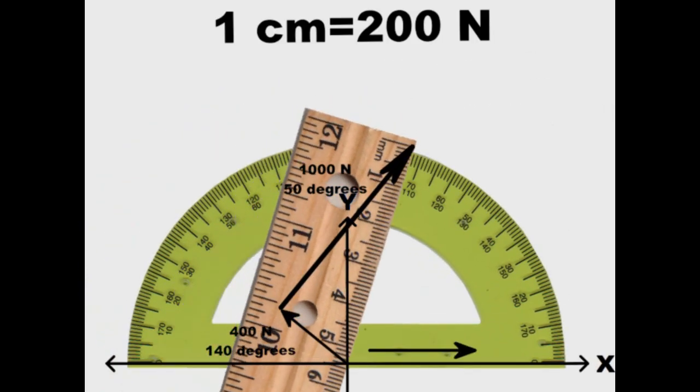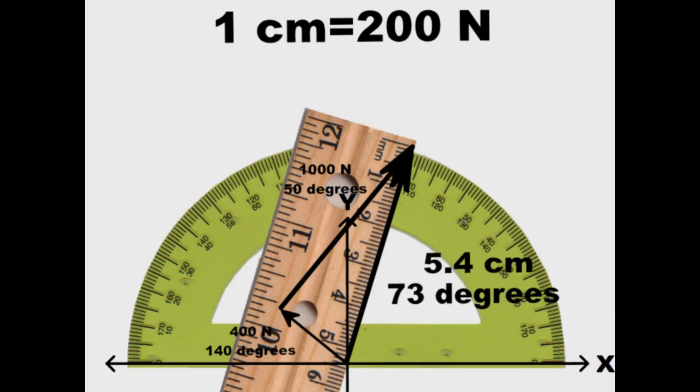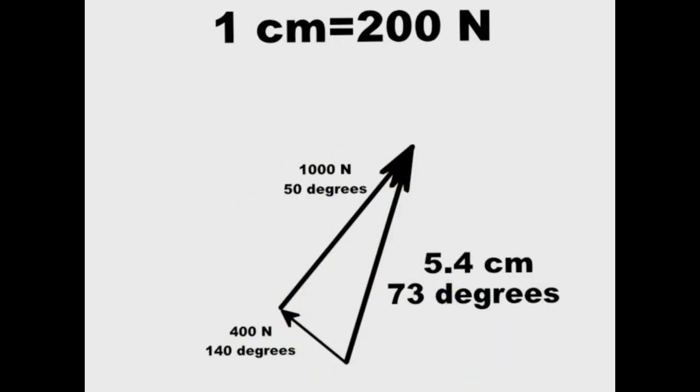After we add these up, we get a resulting vector that is 5.4 centimeters long and 73 degrees. However, we are not looking for a distance in centimeters. We are looking for a force.